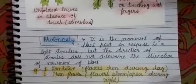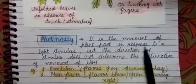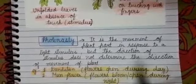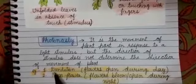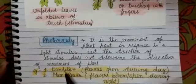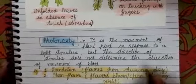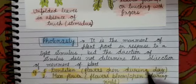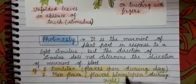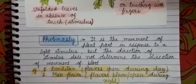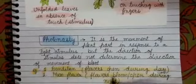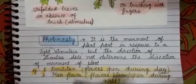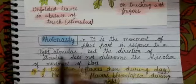Our last topic is photonasty — the movement of a plant part in response to a light stimulus. Again, the direction of the stimulus does not determine the direction of movement. For example, dandelion flowers open during the day and close at night. In contrast, moonflowers bloom and open during the night only. So light plays a very important role: dandelion flowers bloom in the presence of light, while moonflowers bloom in its absence. This concludes our chapter.